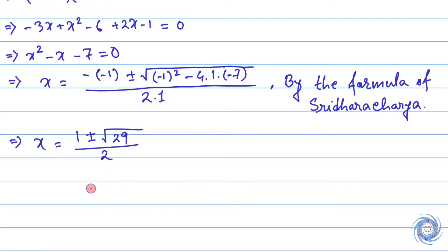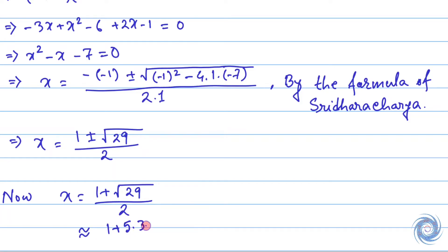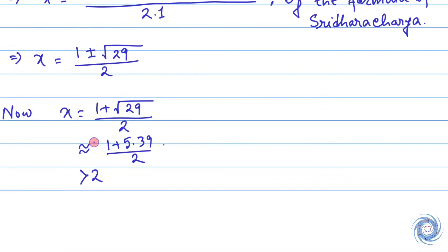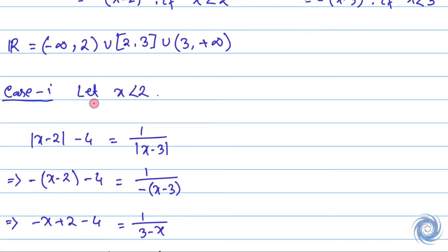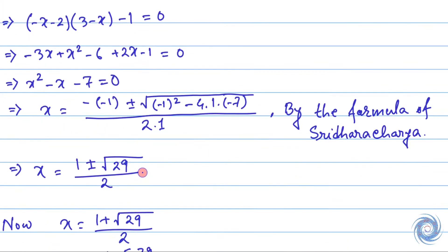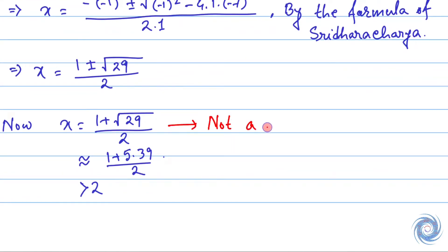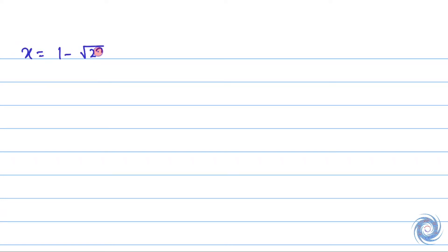Now let us take x = (1 + √29) / 2. This value is greater than 2, and therefore x does not satisfy the given condition x < 2, so this is not a solution. Now let us take x = (1 - √29) / 2. This is a negative number and therefore less than 2, so this is a solution.